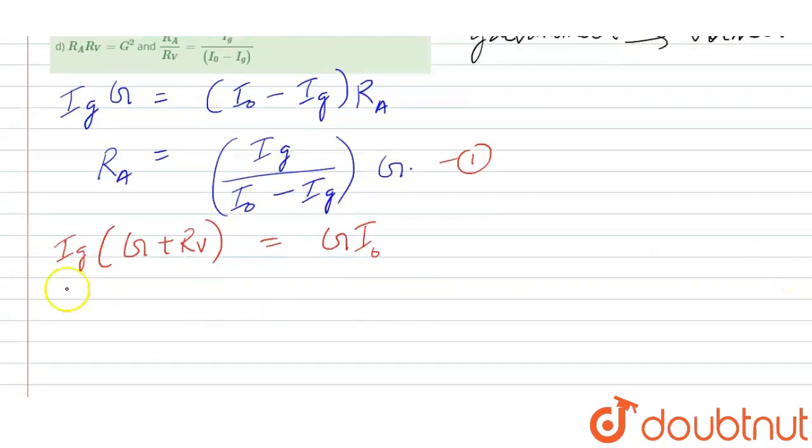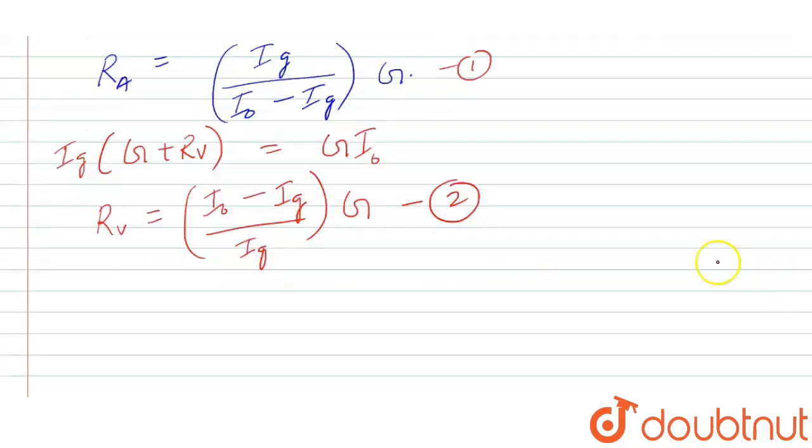Similarly, let us find out what is RV. Rearrange for RV here. We get RV is equal to I0 minus IG divided by IG, the whole multiplied by G. So let me mark this as equation number 2. We have two equations.